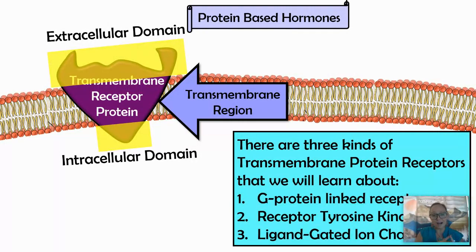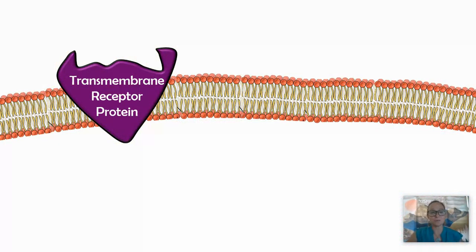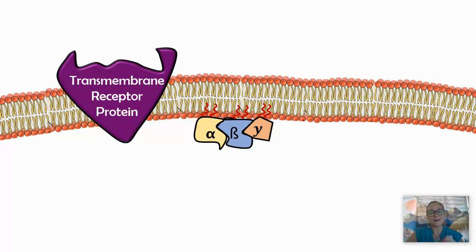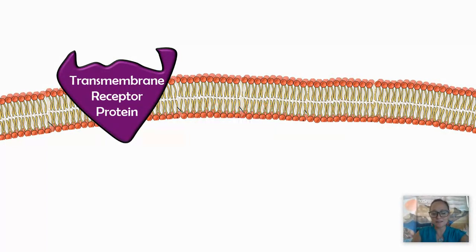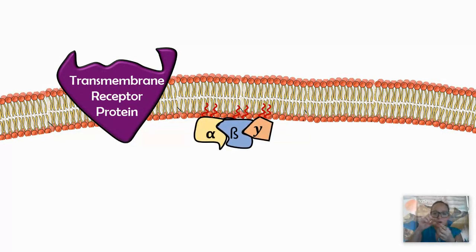There are three different kinds of receptor proteins we're going to discuss: G-protein linked receptors, receptor tyrosine kinases, and ligand-gated ion channels. Starting with the G-protein linked receptor — here you have a group of protein subunits. Those little red tail things are lipids that help the peripheral protein stay attached to the membrane and not float away.